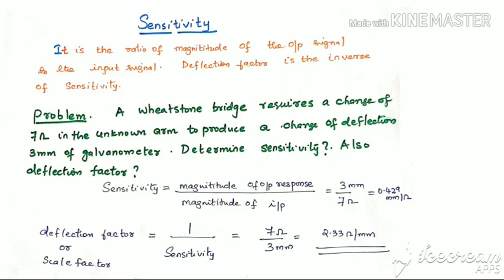Let us see one problem. A Wheatstone bridge requires a change of 7 ohms in the unknown arm to produce a change of deflection of 3 mm of galvanometer. Determine sensitivity and also find out the deflection factor. Sensitivity is magnitude of output by magnitude of input, so 3 mm by 7 ohms equals 0.429 mm per ohm. Deflection factor equals 1 by sensitivity, that is 7 ohm by 3 mm, which equals 2.3 ohms per mm.